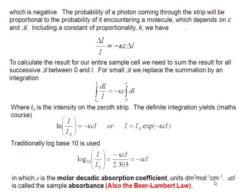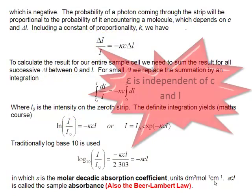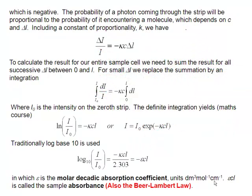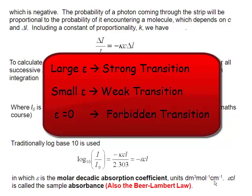Epsilon is what we call the molar decadic absorption coefficient. And it's a function of the molecule. So it's independent of the concentration or the length of the sample. It tells us about the propensity of the molecule to absorb light. If epsilon is a large number, then that's a strong transition. If it's a small number, then it's a weak transition. If it's zero, but the energy levels are there, then it's a forbidden transition.